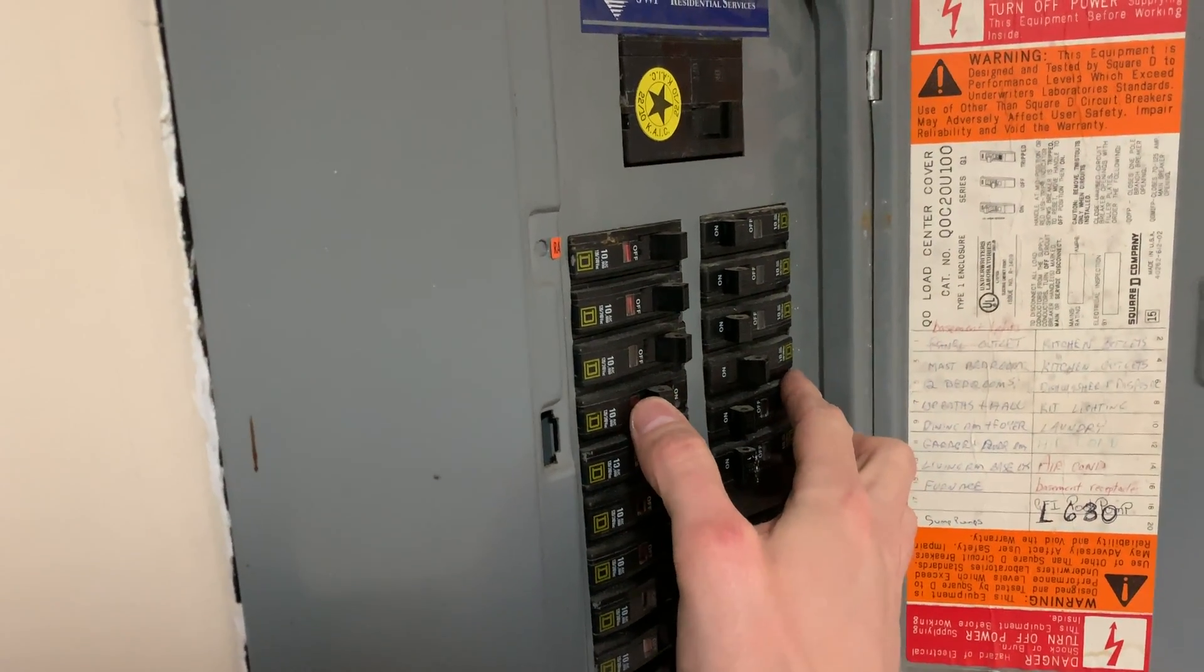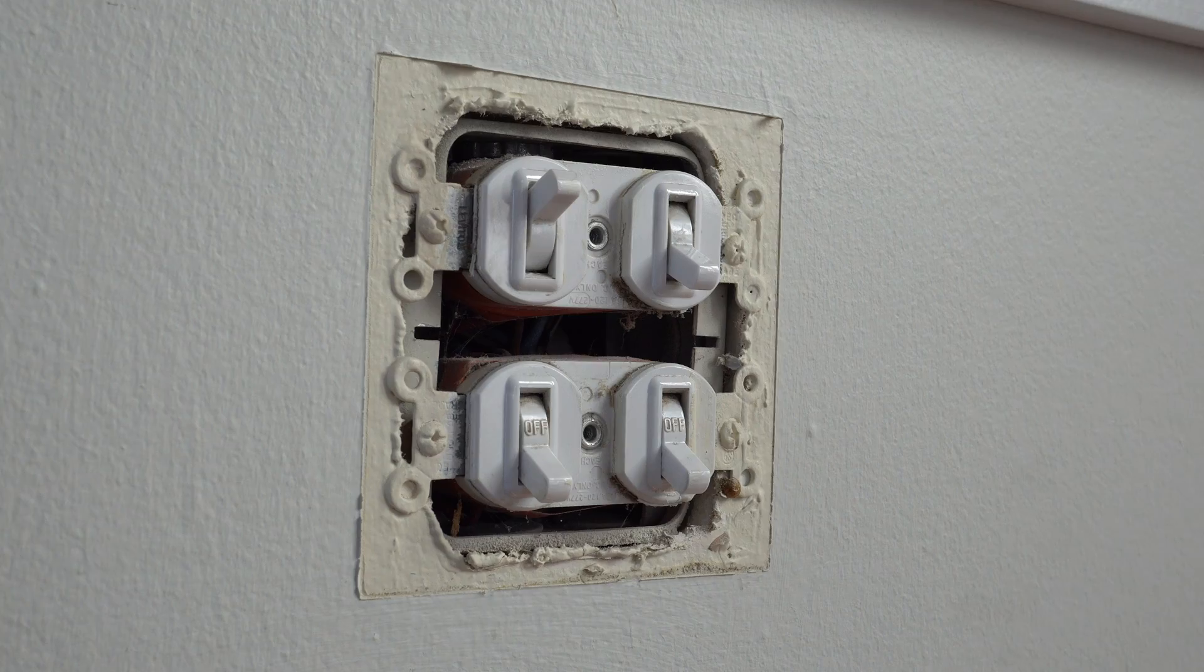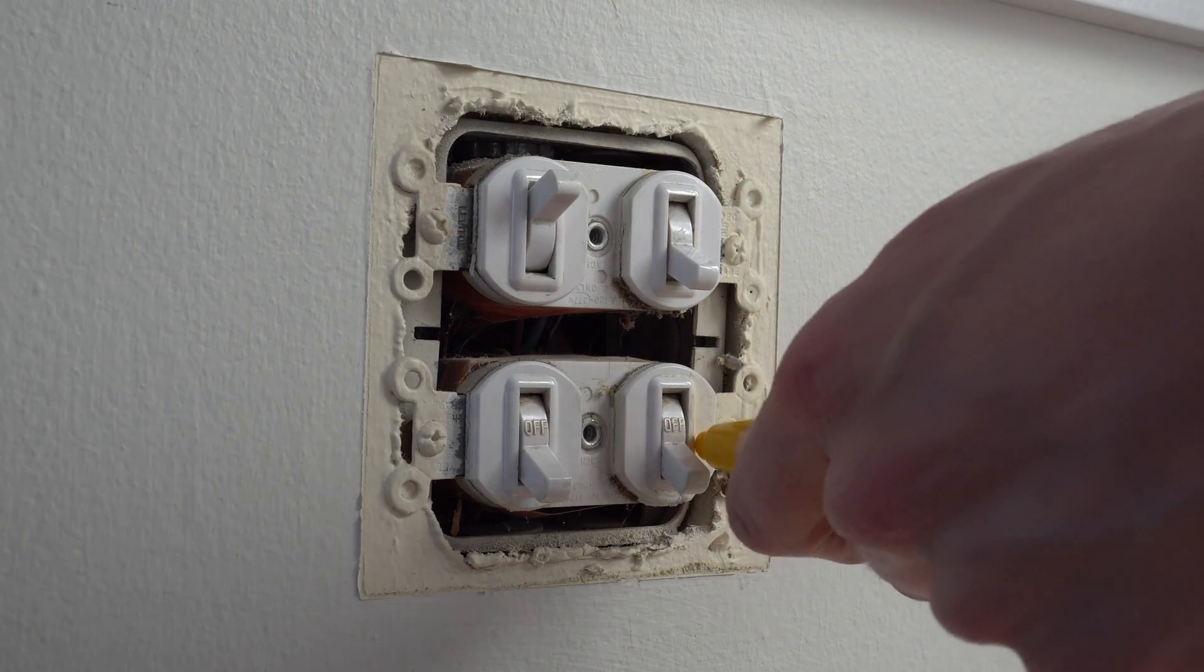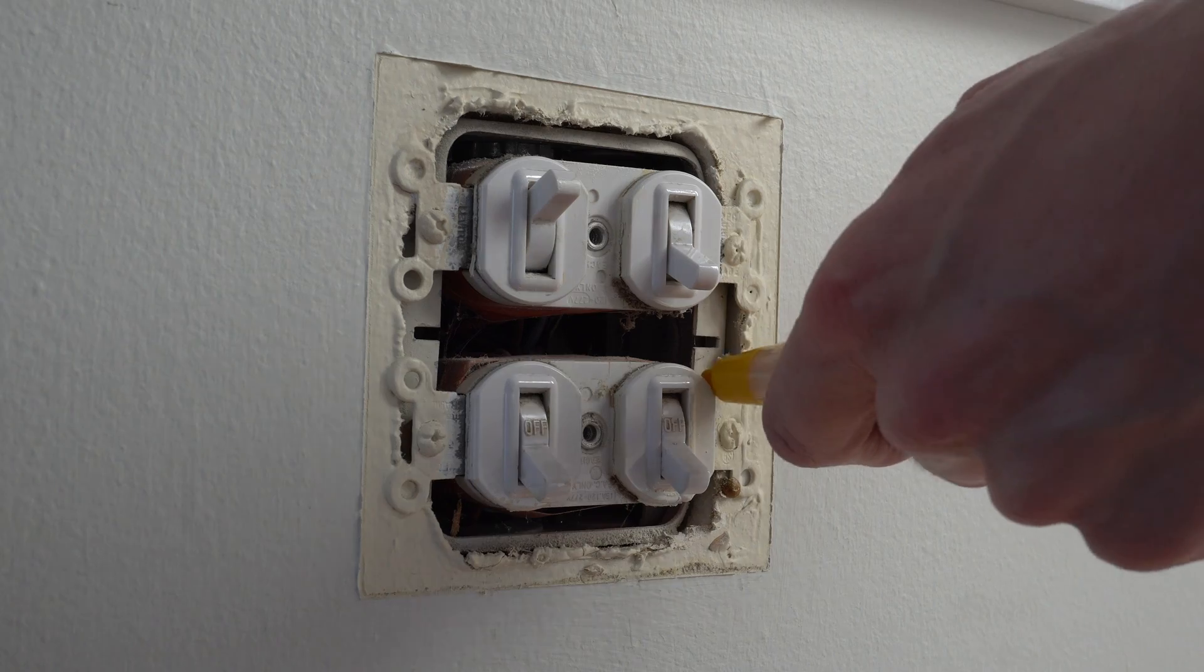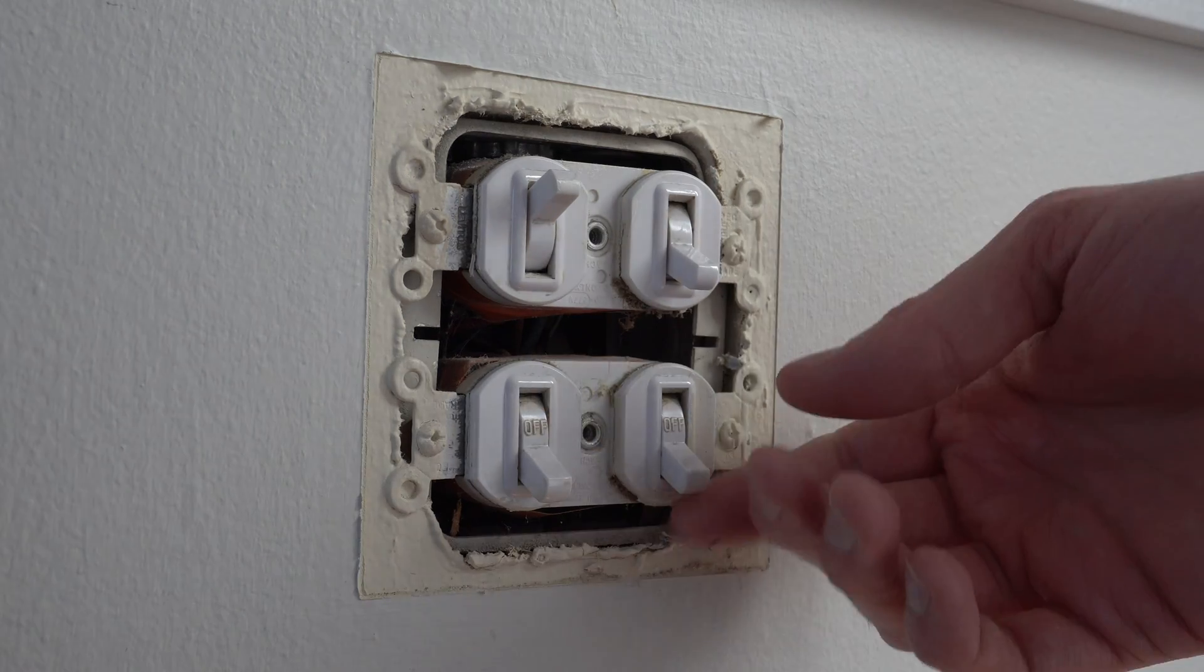So you're ready to install your switches now. This is the exciting part. Go shut off the breaker, cut the electricity to those switches, then go up and use your circuit volt tester to just make sure that's actually working, you can't turn on the lights or anything, and pull those switches out from the wall.